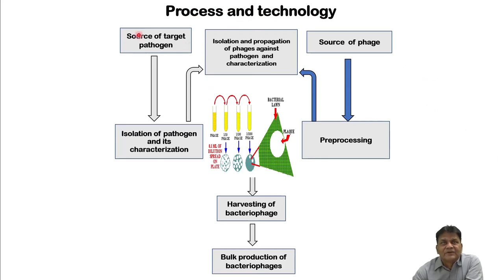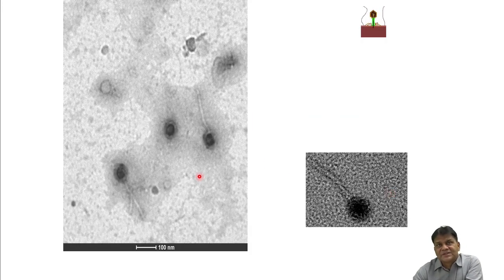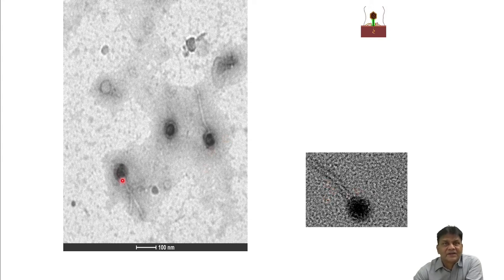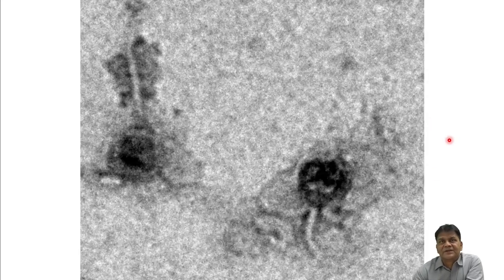The phage therapy process involves having a source of the target pathogen — isolating it — and then sourcing bacteriophages, usually from water and soil. A lawn culture is made, then chloroform-treated water or soil is placed on the lawn; the phages present attach to bacteria, replicate, and are harvested for bulk production for clinical use. Our own bacteriophages have been electron-microscopically imaged — this is the head and tail structure, shown against Pseudomonas aeruginosa.